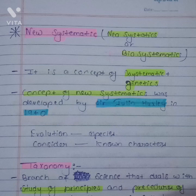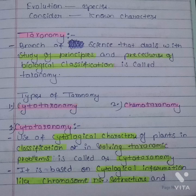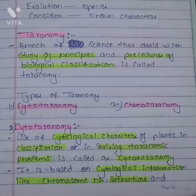Taxonomy is the branch of science that deals with the study of principles and procedures of biological classification. Taxonomy is of two types: cytotaxonomy and chemotaxonomy. Cytotaxonomy uses cytological characters of plants in classification to solve taxonomic problems. The use of cytological characters in taxonomy is called cytotaxonomy.